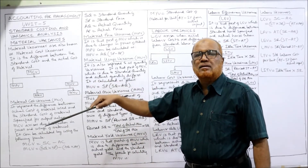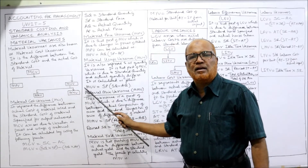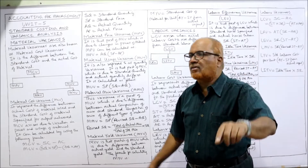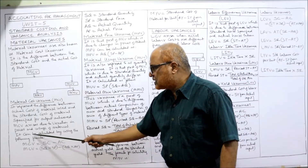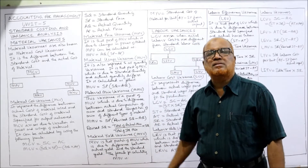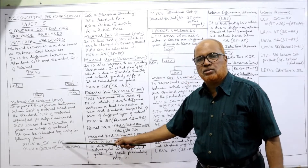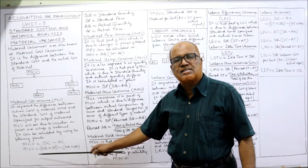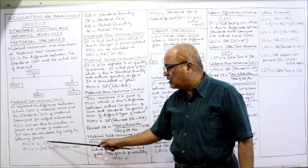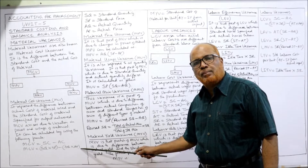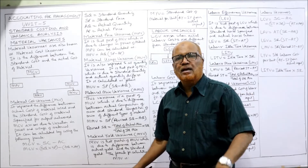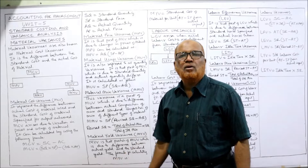MCV arises due to variation in price and usage of material. Material price variance and material usage variance give rise to material cost variance. The formula: MCV = Standard Cost − Actual Cost, where Standard Cost = Standard Quantity × Standard Price (SQ × SP), and Actual Cost = Actual Quantity × Actual Price (AQ × AP). So MCV = (SQ × SP) − (AQ × AP).